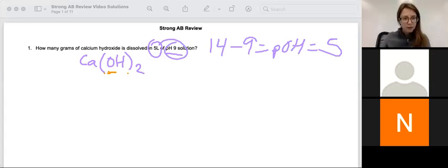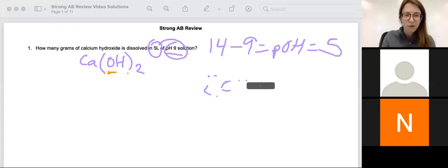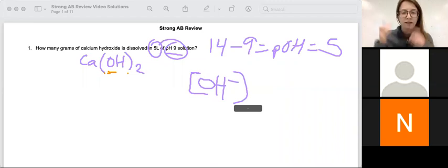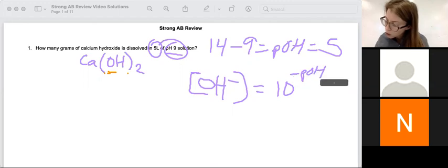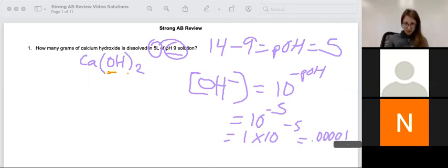Okay, with my pOH, I then can find my OH molarity. Sorry, I was having an issue with my pen there, but I can find the OH molarity—remember brackets means molarity—by saying 10 to the negative pOH. In my calculator, I would type 10 to the negative 5, and it's going to tell me either 1 times 10 to the negative 5, or you could say 0.00001.